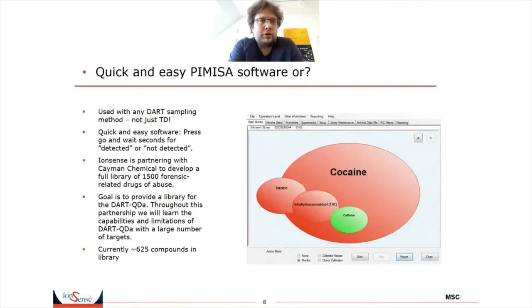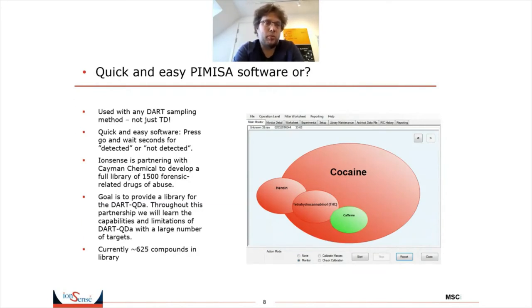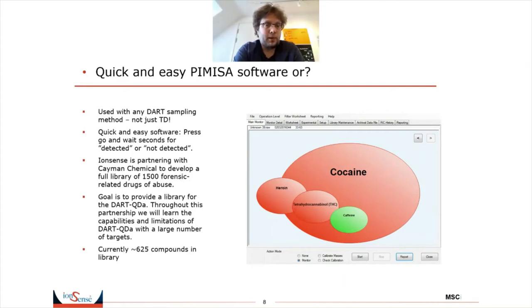In many cases you want a quick and smooth process, and for that you need a software package. The Pimisa software is one of these. You can use it with any DART sampling method — not just the thermal dissolver, but also quick strips, open spot, or manual surface sampling, whatever module is available. Libraries are available for both drugs of abuse and for explosives, currently around 625 compounds, with an aim to reach at least 1500.